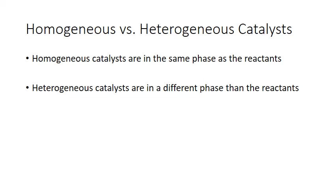A heterogeneous catalyst, on the other hand, is in a different phase from the reactants, and it works by holding one reactant molecule in the proper orientation for the reaction to occur, and sometimes also helping to start breaking bonds. It's thought that polar stratospheric clouds containing solid ice particles serve as heterogeneous catalysts that help release more chlorine radicals over the poles of the earth, and this appears to be why we see the ozone hole over these particular regions.